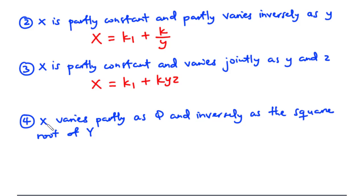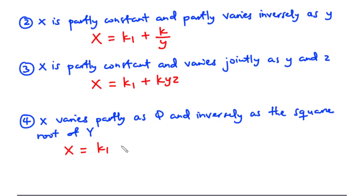For the last case, x varies partly as z and inversely as the square root of y. The statement 'x varies partly as z' is a direct variation. So we have x equals k1 times z plus k divided by the square root of y. These are some of the relations we will encounter when solving a typical partial variation question.